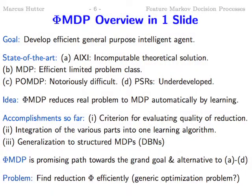Here's the Phi-MDP one-slide overview. The goal is to build general-purpose intelligent systems. The state of the art: AIXI is an incomputable theoretical solution. At the other extreme, what can be solved are finite-state MDPs — and even this is quite non-trivial to learn. As soon as you go to partial observability, it's notoriously difficult; there are papers dealing with four states, which is the state of the art. POMDPs are a big topic but I have little hope they lead to something really practical.